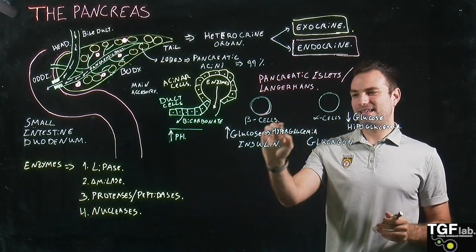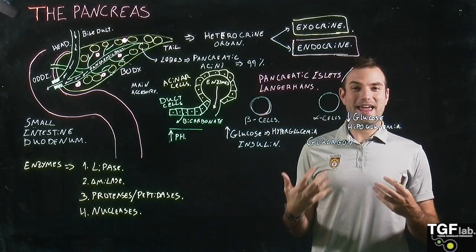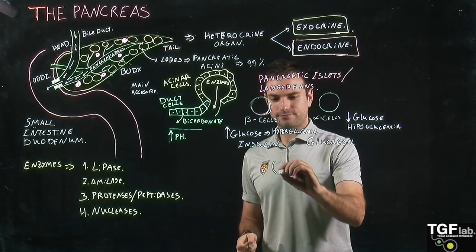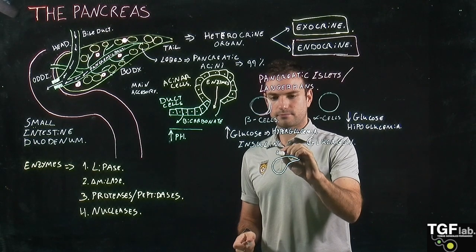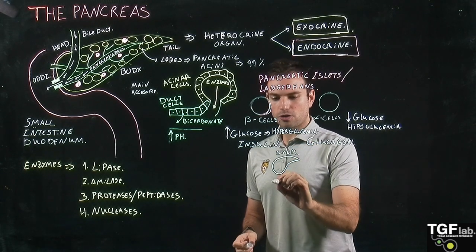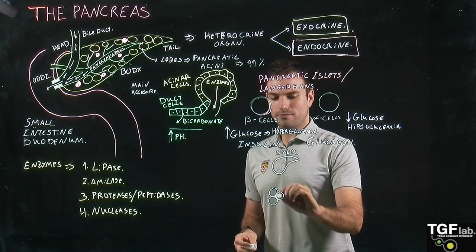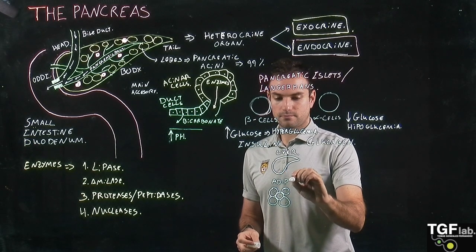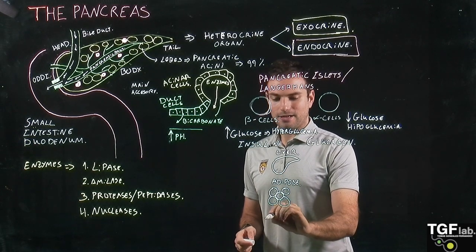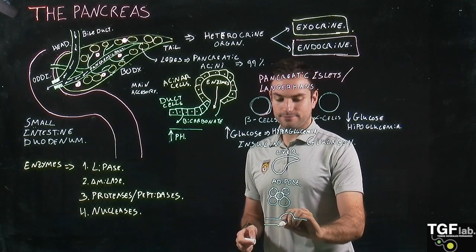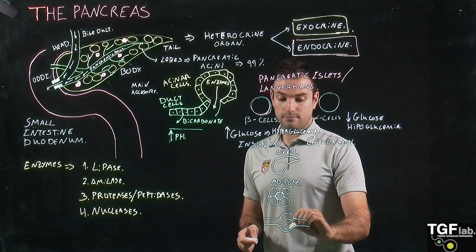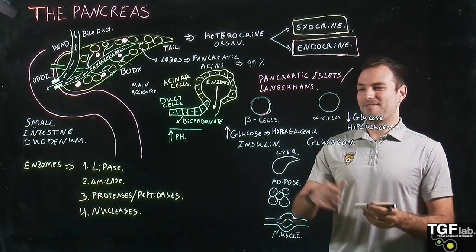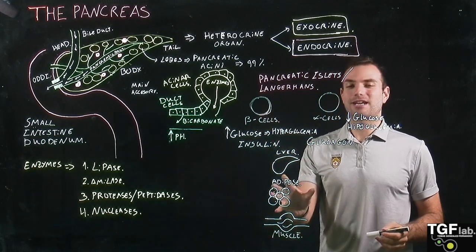Both beta cells and alpha cells — insulin and glucagon — are going to have effects in three different organs in our body. They are going to have effects in the liver, they are also going to have effects in the adipose tissue, and finally they are going to have effects in the muscle.